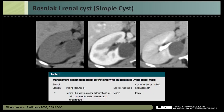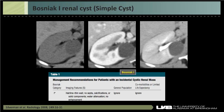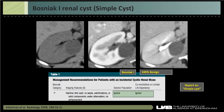A Bosniak 1 renal cyst measures fluid attenuation with no perceivable septations and very thin walls — a simple cyst. These are 100% benign; we ignore them and need no additional follow-up. It's not recommended to use the term 'Bosniak 1' in reports — just say 'simple cyst,' as only radiologists or urologists would understand the classification term.